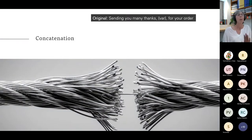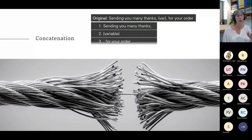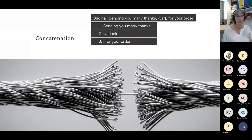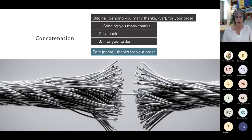Concatenation leads to broken strings. For instance, 'Sending you many thanks [variable] for your order' creates three different strings that could be spread through a spreadsheet with no way to connect them. Whereas if we use this edit — with a variable identifiable as a name — we get 'John, thanks for your order.' Even if they get separated, they can still be translated.